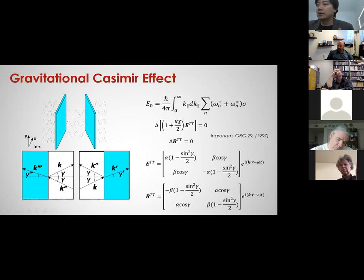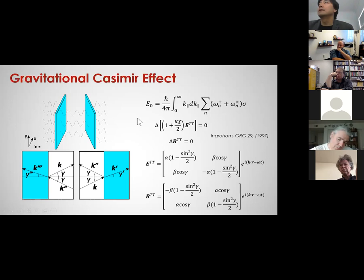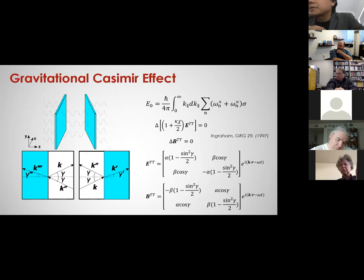Applying this gives us boundary conditions originally derived by Igram in 1997, where δ means a change in a value across the interface. χ is the gravitational susceptibility, analogous to the electric susceptibility. The traceless tangential component of the gravito-electric field is given by one expression, and the gravito-magnetic component by another. α gives the maximum amplitude of the plus polarization of the gravitational wave, and β gives the maximum amplitude of the cross polarization.